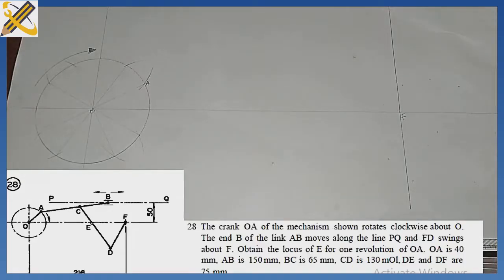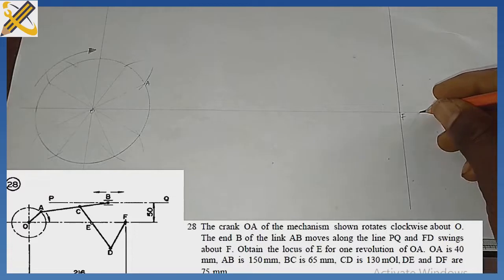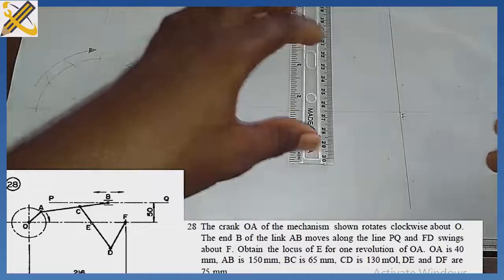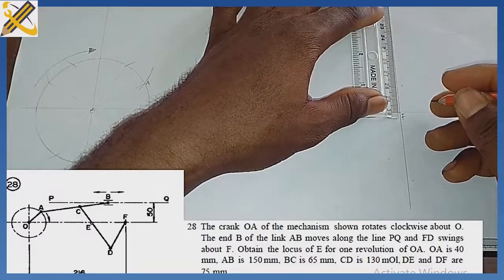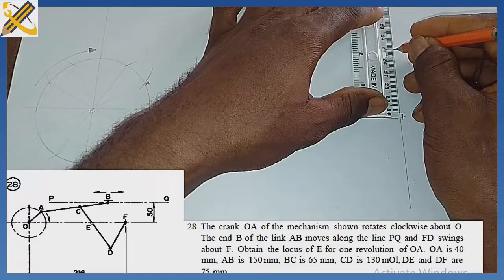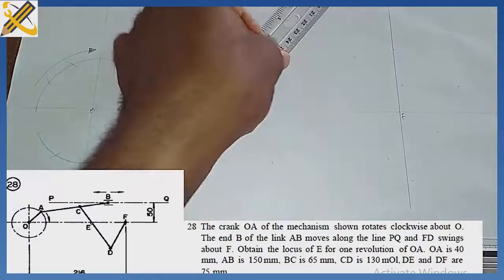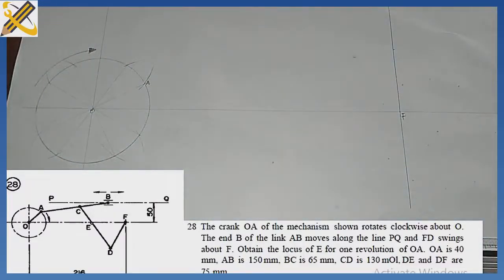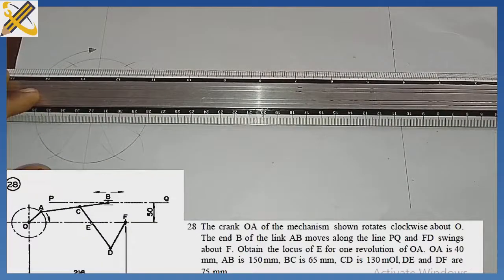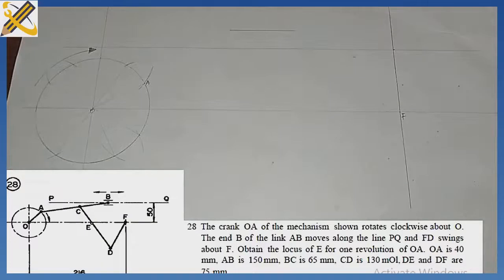After doing that, take note: from line F, mark 50 upwards. Picking my ruler, I measure 50 upwards from line F. Then project it horizontally. After projecting it horizontally, take note — the question says the end B of the link AB moves along the line PQ.